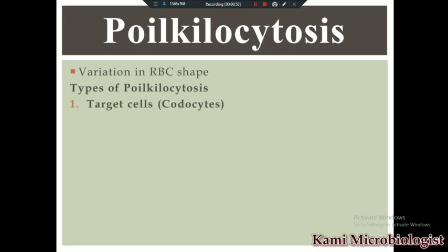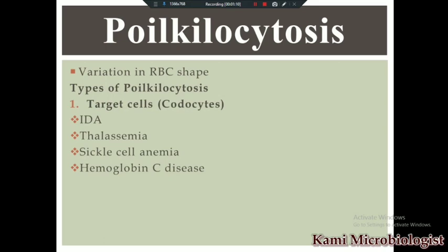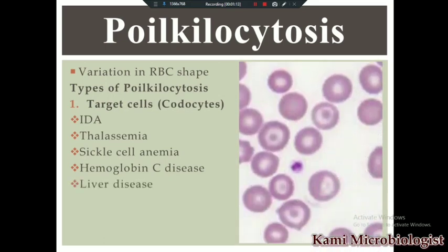The first type is called target cells, also known as codocytes. Target cells mainly occur due to iron deficiency anemia, thalassemia, sickle cell anemia, hemoglobin C disease, and liver disease. These are the main conditions in which target cells will be present.